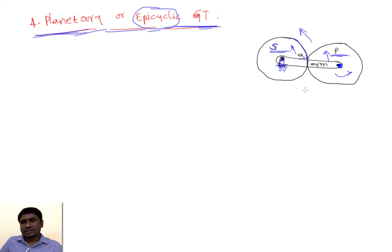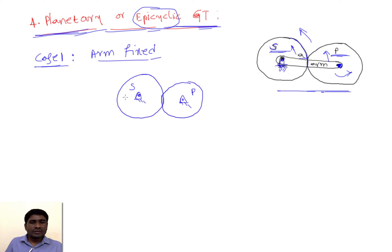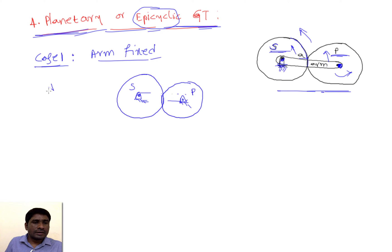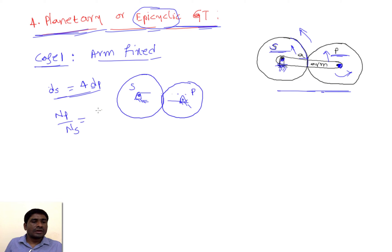I will break down this entire system into two cases. The first case: I will keep this arm as a fixed one. Since the arm is fixed, both shafts are fixed. For example, I'll take the diameter of S equal to four times the diameter of P for the sake of understanding. So nC/nS = dS/dP, which equals four.